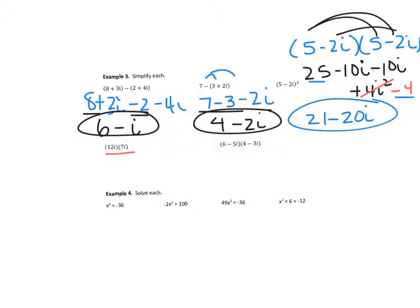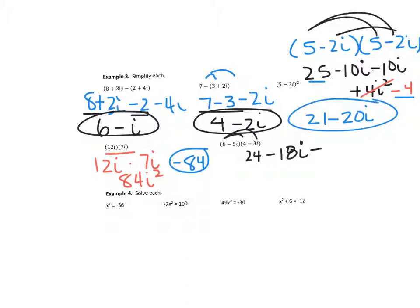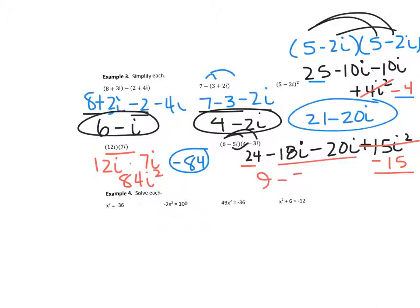This one is just 12i times 7i, which is 84i squared. Since i squared is negative 1, that is negative 84. Then for the last foil, it's going to be 24 minus 18i minus 20i, plus negative 5 times negative 3 is 15 times i squared — and since i squared is negative 1, that becomes negative 15. Combining like terms, real part first: 24 minus 15, then the imaginary part.